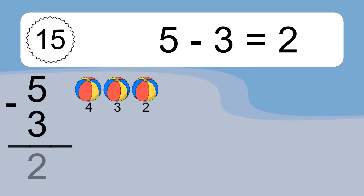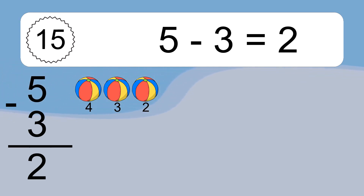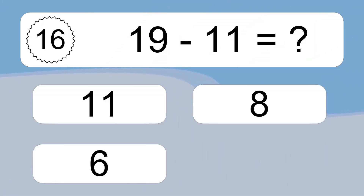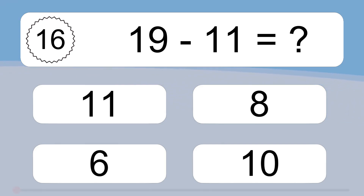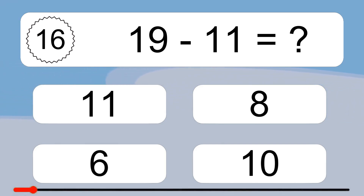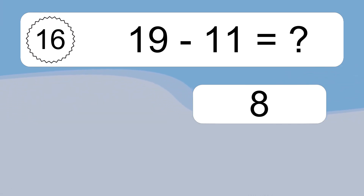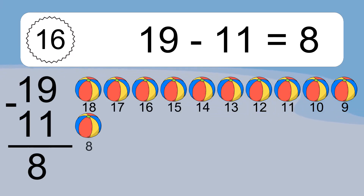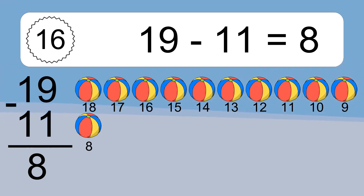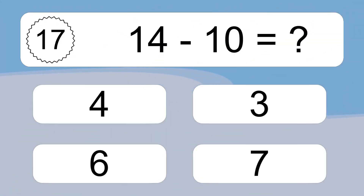5 minus 3 equals 2. Let's count it: 4, 3, 2. 19 minus 11 equals what? 19 minus 11 equals 8. Let's count it: 18, 17, 16, 15, 14, 13, 12, 11, 10, 9, 8. 14 minus 10 equals what?